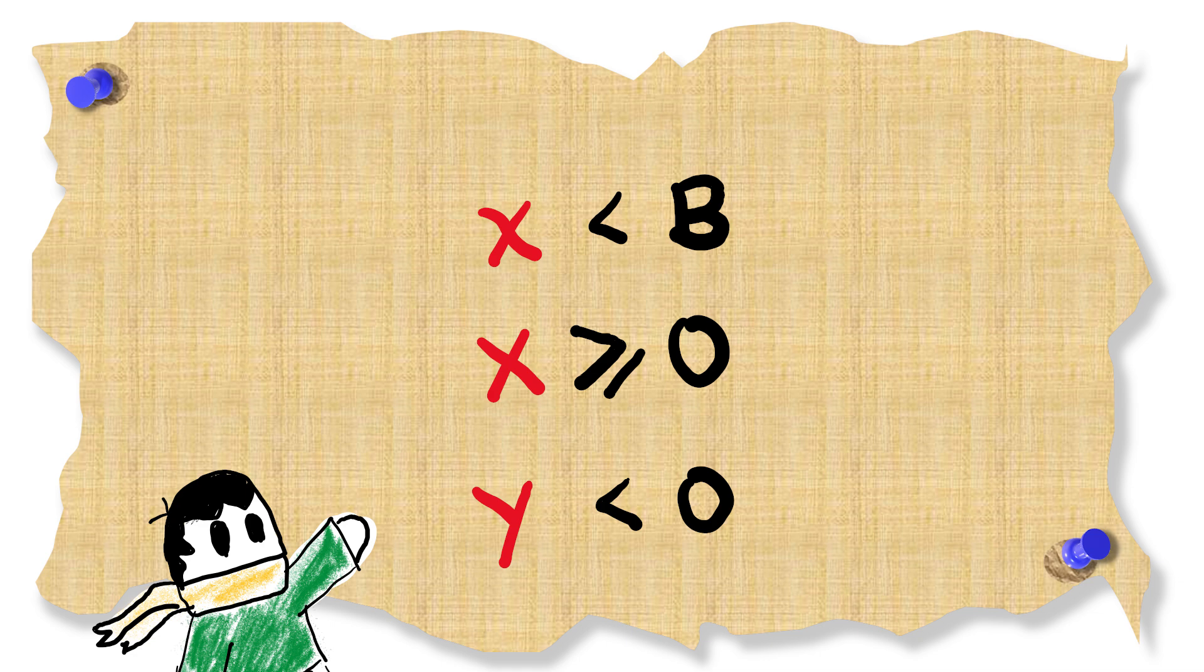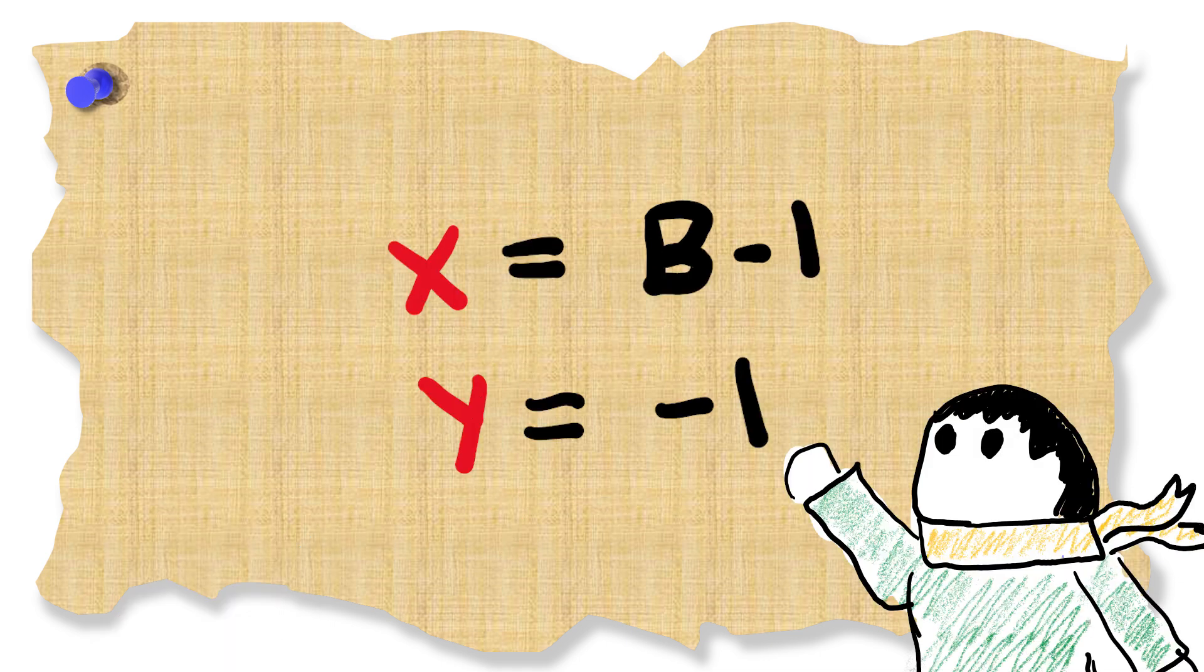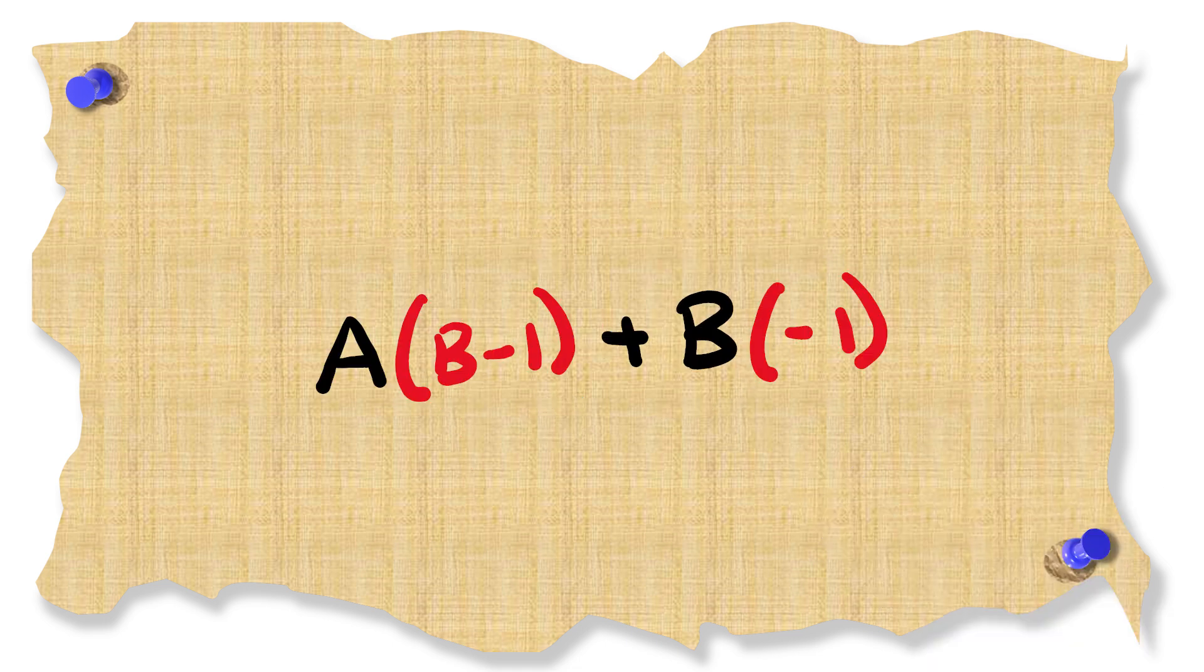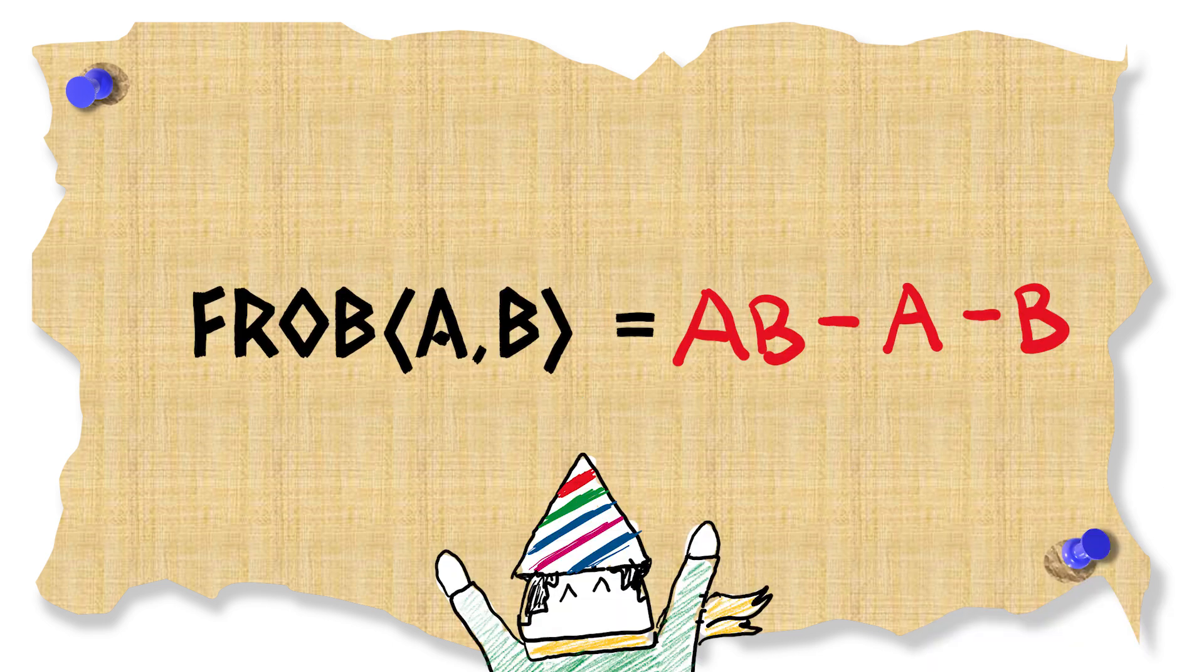As we want the final number to be as large as possible we only have the choice to pick x as b minus 1 and y as minus 1. This gives us the Frobenius number for a and b which is ab minus a minus b.